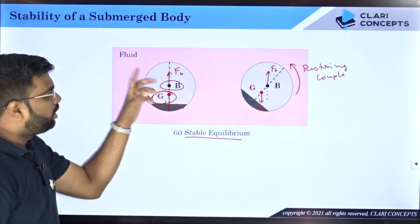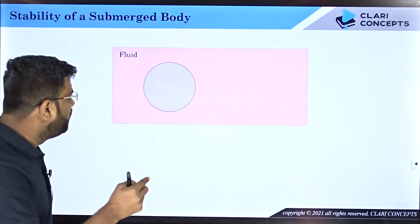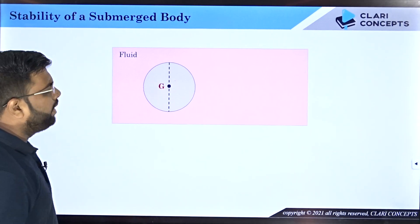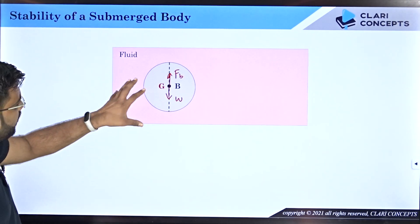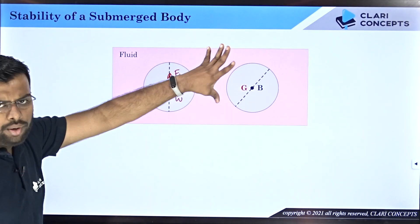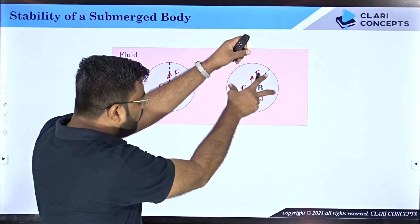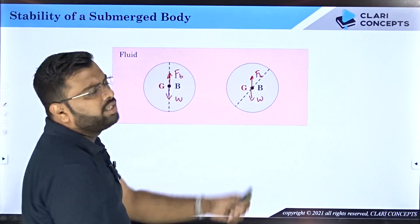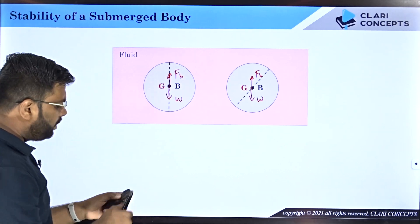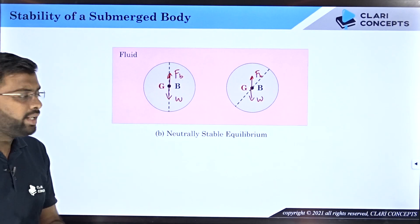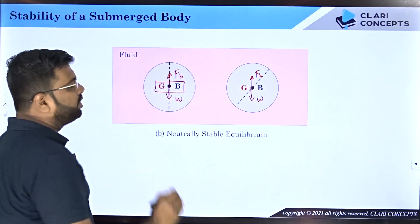Now let's take a uniformly dense object where the CG is at the center and the buoyancy force also acts at the center — they are at the same point. If you tilt the body and release it, the weight and buoyancy forces still balance each other at all orientations. The body will stay in the tilted position — it neither regains its original position nor deviates further. This is called neutrally stable equilibrium. Here, the center of buoyancy and center of gravity coincide.